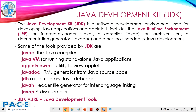Now we will see what is the Java Development Kit — JDK. The Java Development Kit is a software development environment used for developing Java applications and applets. It includes the Java Runtime Environment (JRE) and interpreter/loader, a compiler (javac), an archiver (JAR), a documentation generator (javadoc), and other tools needed in Java development. The tools provided by the JDK include javac — the Java compiler.